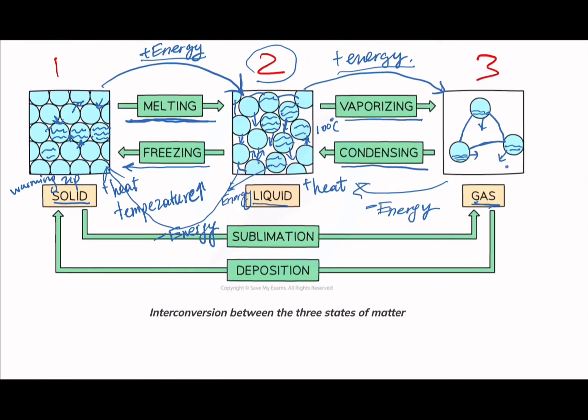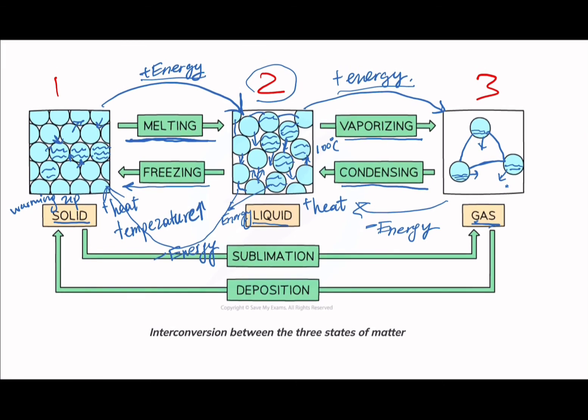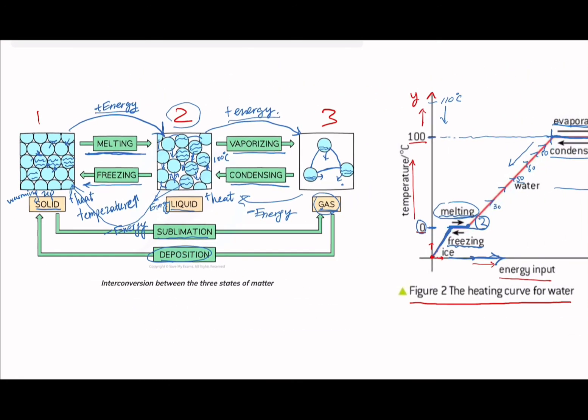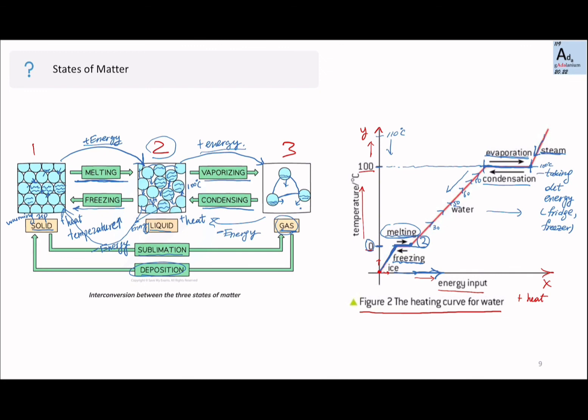Lastly, we're going to be talking about sublimation. You guys are going to have a video about these changes in the SCORM package. From solid, if we transition directly into gas, it's called sublimation. And from gas going backwards to solid, skipping the liquid state, it's called deposition. You're going to see some of the examples in your YouTube videos, and that's about it for changing the states of matter.